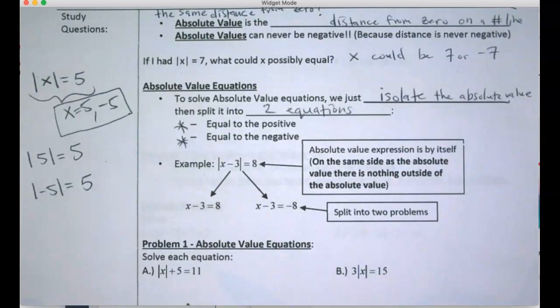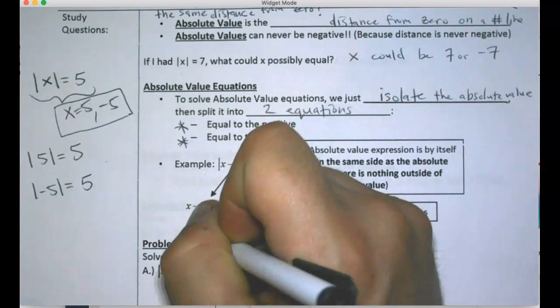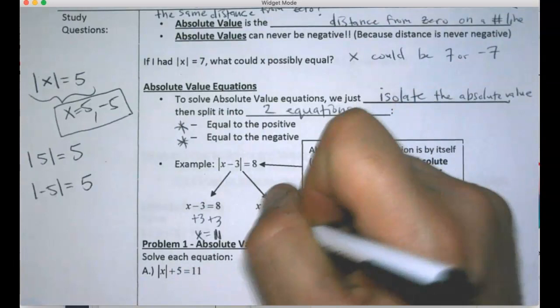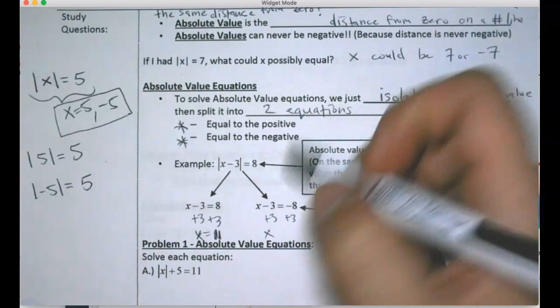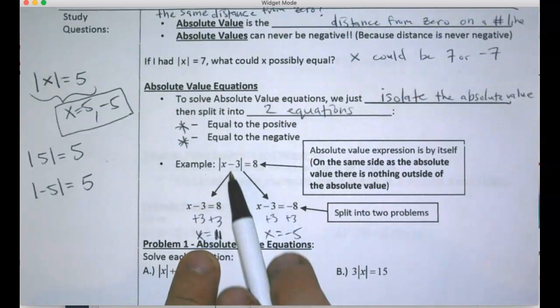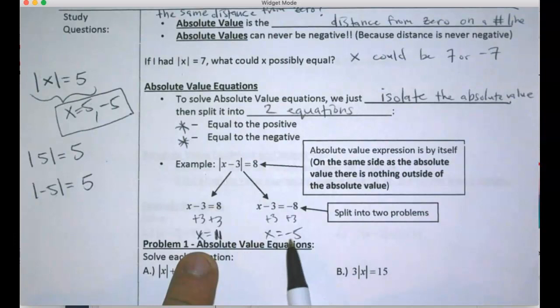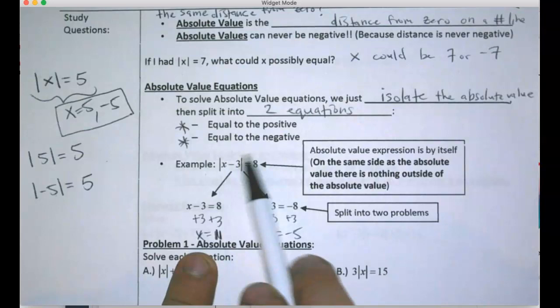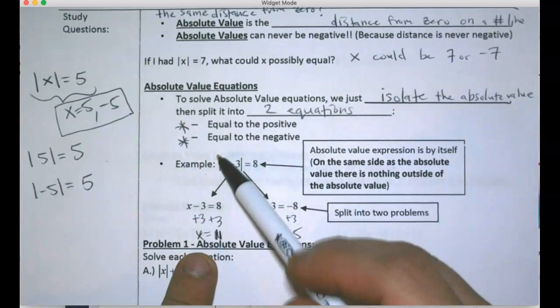And one of the equations equals negative 8. Solving both — you add 3 — so x might be 11. Adding 3 to the negative equation: negative 8 plus 3 is negative 5. So in the problem absolute value of (x minus 3) equals 8, x might be 11, but it might be negative 5. Check: 11 minus 3 is 8, absolute value of 8 is 8. Plugging in negative 5: negative 5 minus 3 is negative 8, but negative 8 is still 8 spaces from zero, so it comes out positive.